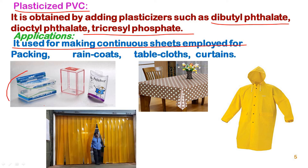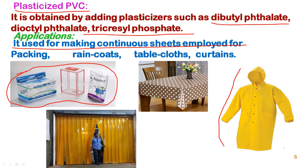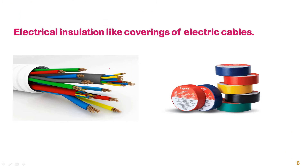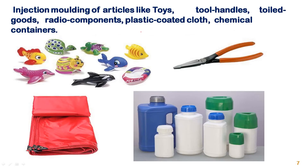Because plasticized PVC can be converted into continuous sheets, it is used for making packing sheets, raincoats, tablecloths, and curtains. It is also a very good electrical insulator, used for insulation of wires and as electrical insulation tape around copper wire.